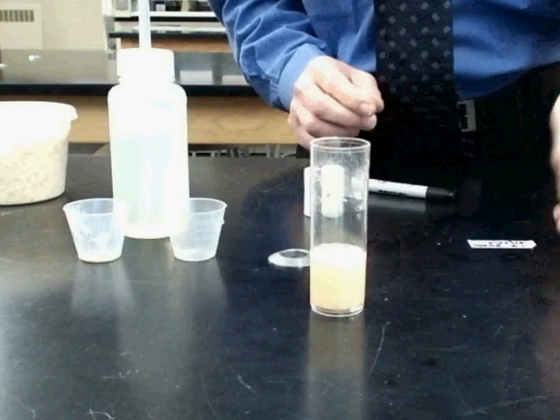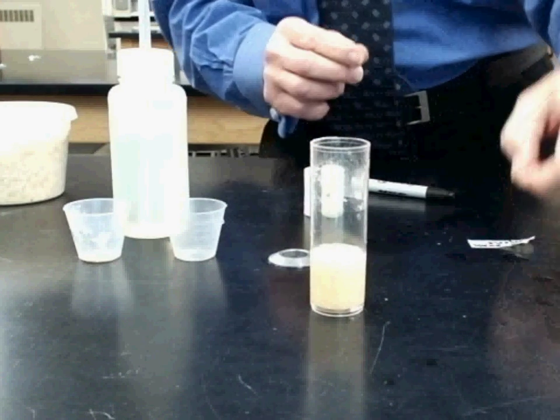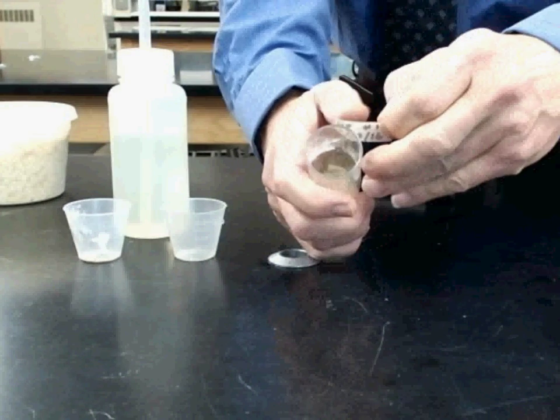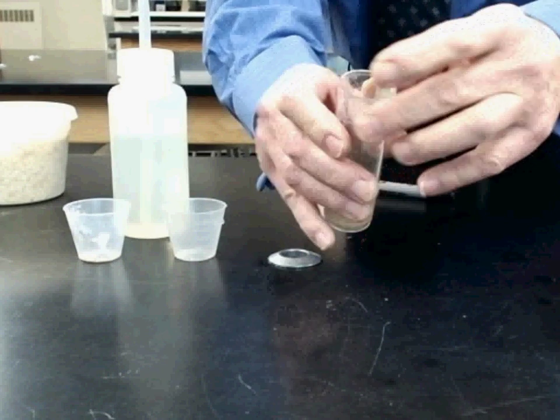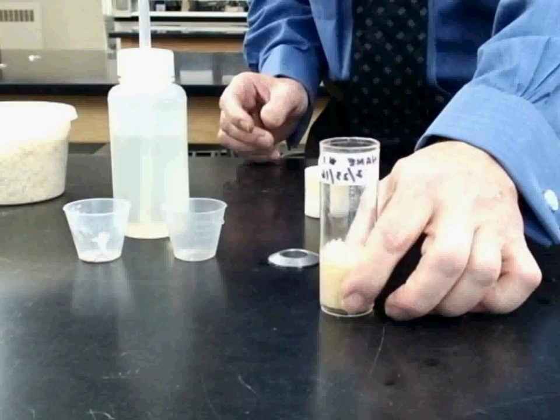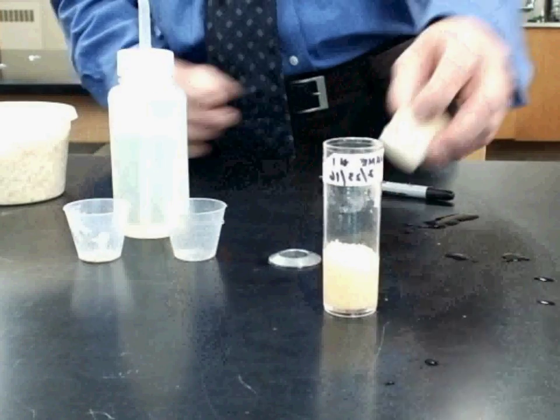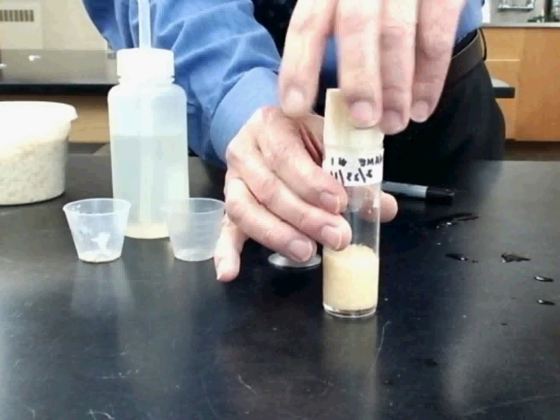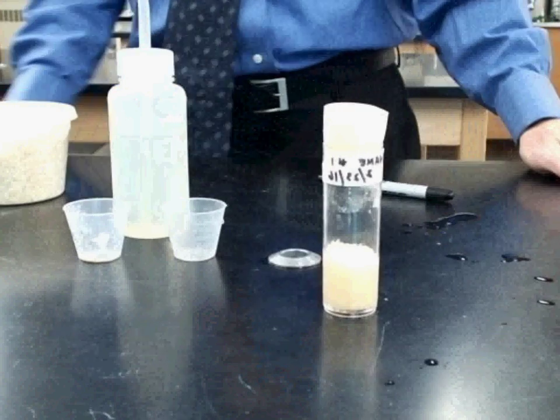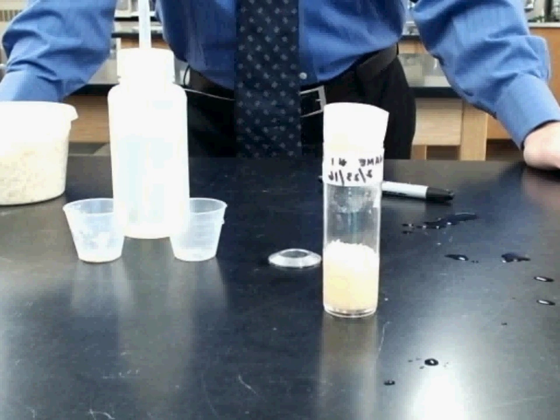And I'll place that at the top of the culture vial. My name, culture number one, and the date. And the sponge top then goes right there. And we're ready to inoculate.